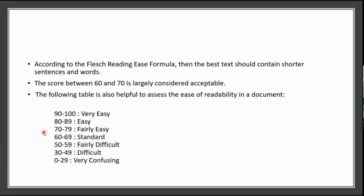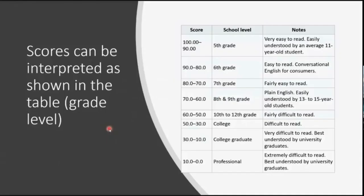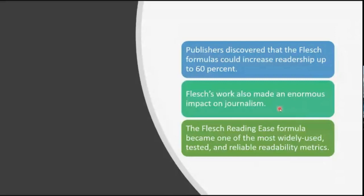If you follow the same measurement techniques — short sentences and simple words — then your text will be readable for your audience. Based on the grade scale, a score of 90–100 means very easy to read, easily understood by an average 11-year-old in plain English. Most English magazines and newspapers test their readability level, and this is now very popular in journalism. After using the readability score, editors observed a very good impact, as they modified text based on their audience.